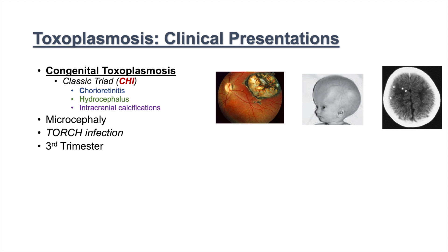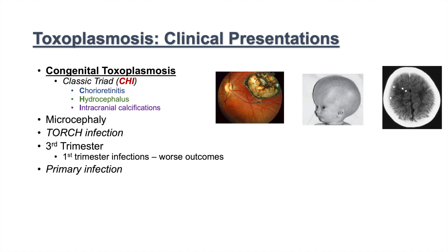Generally during pregnancy, a woman will be infected with toxoplasma in the third trimester, however it can happen at any trimester. Being infected in the first trimester leads to worse outcomes for the infant. When we talk about infection during pregnancy, we mean primary infection. If a woman has been infected prior to pregnancy, she has already cleared or suppressed the infection and it is not a concern. It is more of a concern when this is the first time a woman has been infected with toxoplasma during her pregnancy.